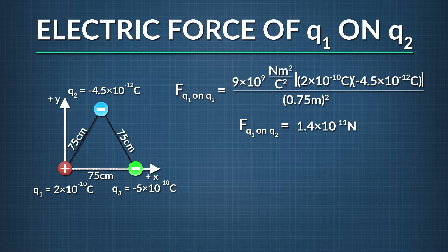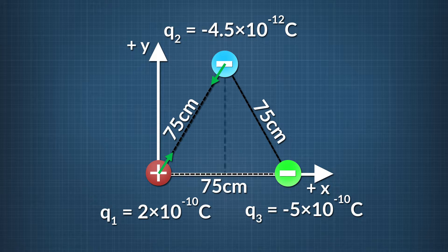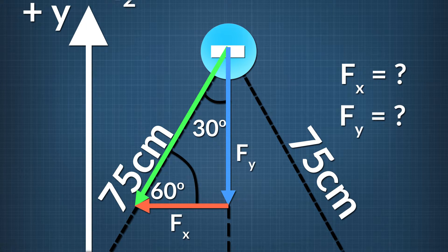Now, in what direction does the force point? Since q1 and q2 have opposite charges, we know the force between them is attractive. Since we will add this force to another one later on, what we'd really like to know is the amount of this force broken up into its x and y components. We can use the fact that drawing a vertical line from q2 down to the x-axis creates a 30-60-90 triangle. What we want to find is the x and y components of the electrical force of q1 acting on q2, which we call f sub x and f sub y.